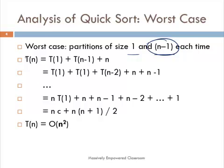When this happens, the recurrence relation for the worst case time complexity of quicksort becomes: T(n) = T(1) + T(n-1) + cost of partitioning. The cost of partitioning is n comparisons — there can only be n comparisons when partition is called for n elements. Therefore, T(n) = T(1) + T(n-1) + n.